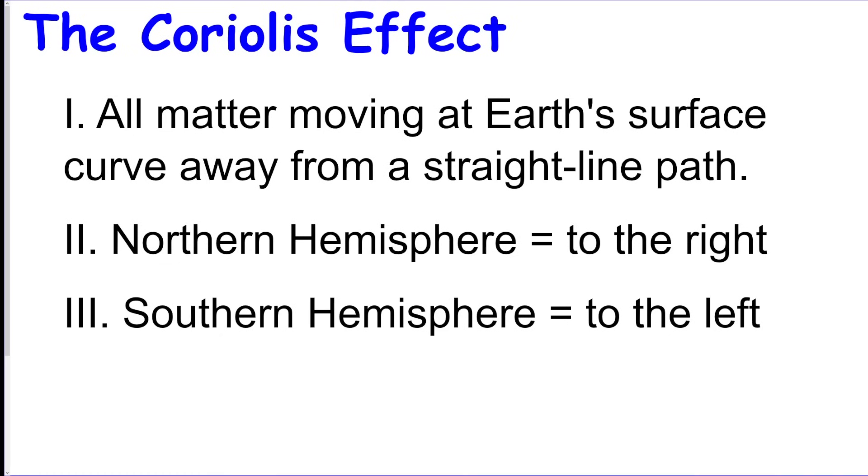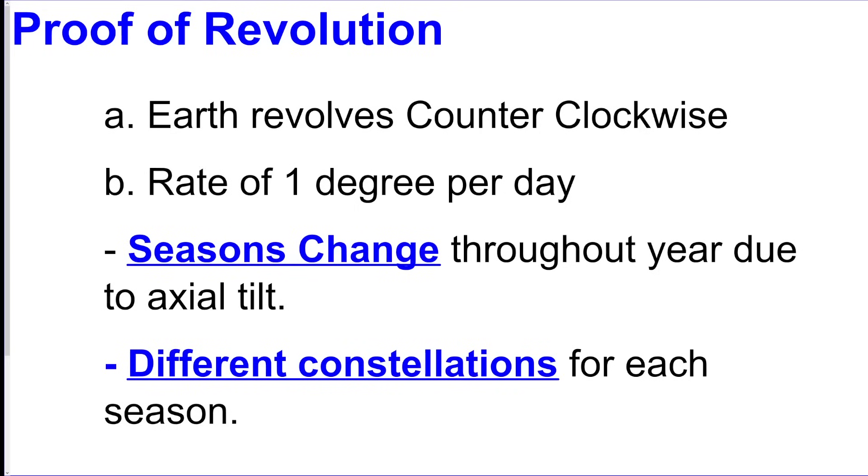How do we know the Earth revolves? Well, we said the seasons change, we see different constellations. We revolve counterclockwise around the Sun, just like we rotate counterclockwise, and it's about one degree per day because we go 360 degrees around the Sun and it takes 365 days in a year. So this is one degree per day, right? As opposed to the rate of rotation, which we talked about earlier, that's 360 degrees spinning in 24 hours. That ends up being 15 degrees every hour. So don't get those confused.